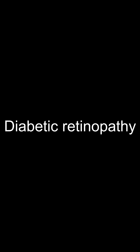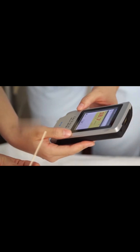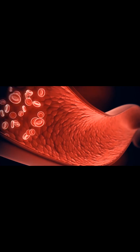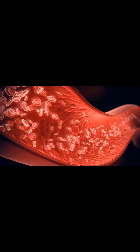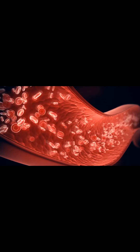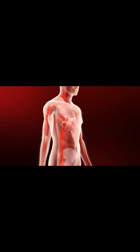Diabetic retinopathy is a disease in which chronically elevated blood glucose levels damage the tiny blood vessels in the retina. Blood vessels may swell and leak. Also, new blood vessels can form. Both processes interfere with visual perception. High blood pressure also produces the disease.